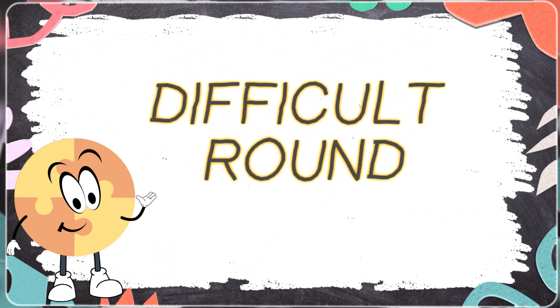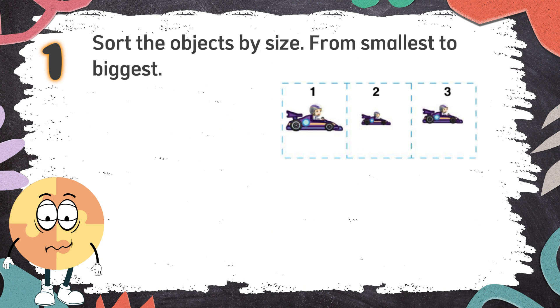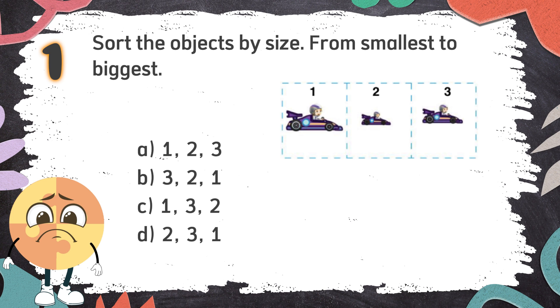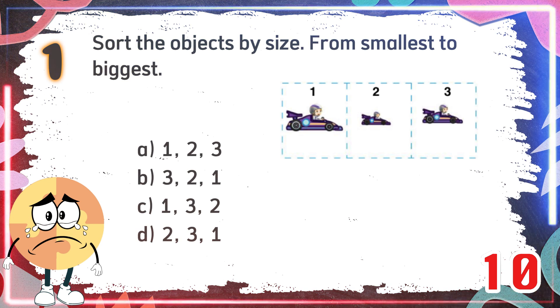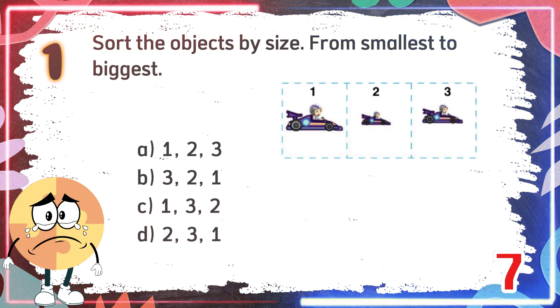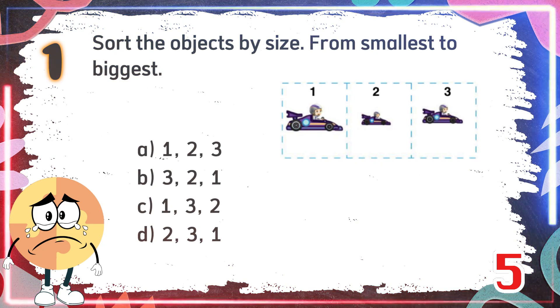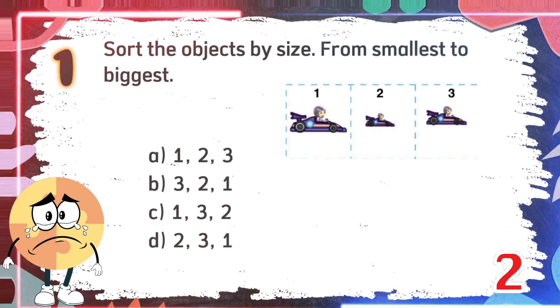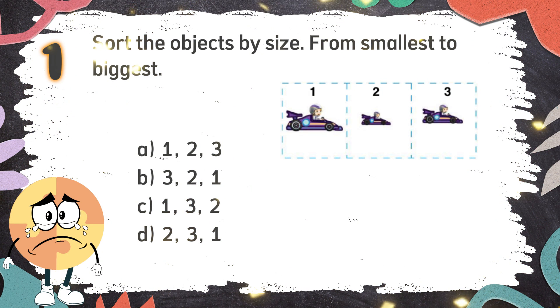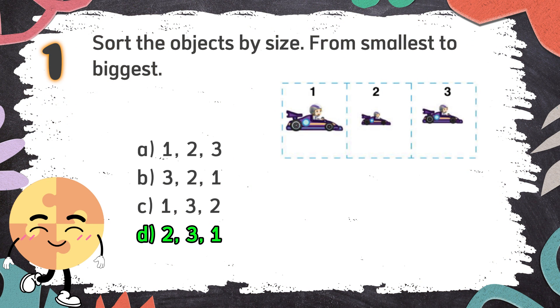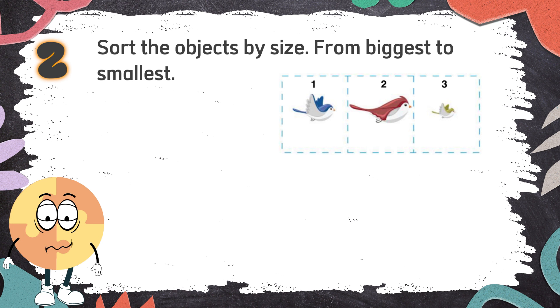Difficult round. Number 1: Sort the objects by size from smallest to biggest. The choices are A, 1 2 3, B, 3 2 1, C, 1 3 2, D, 2 3 1. The correct answer is D, 2 3 1.